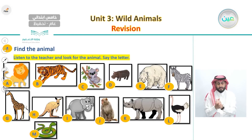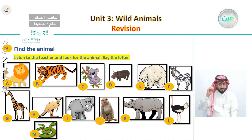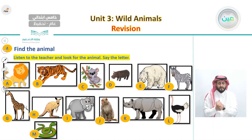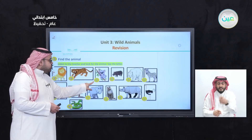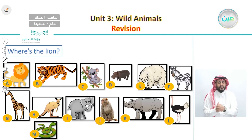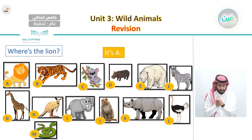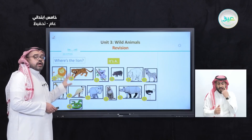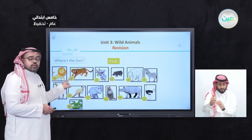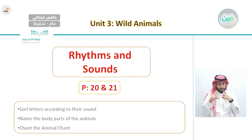We also played a game called Find the Animal, where you listen to the teacher describe an animal and then look for it in the pictures. Once you find it, you say the letter — for example, 'It's picture A' or 'It's A.' We also asked about the zebra: 'Where is the zebra?' — 'It's picture F.'